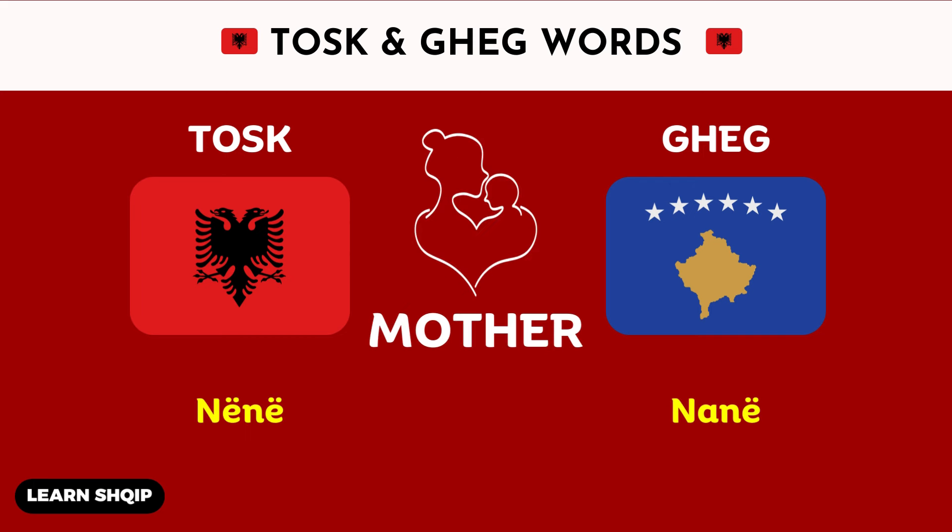Then we have the word mother. In the Tosk dialect, you will say Nen. And then in Geg, you are going to say Nen.